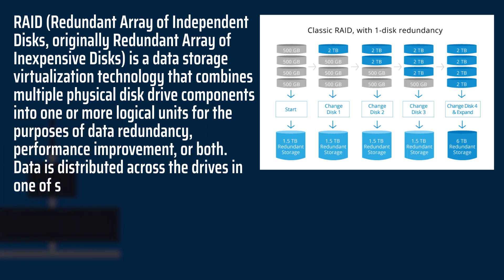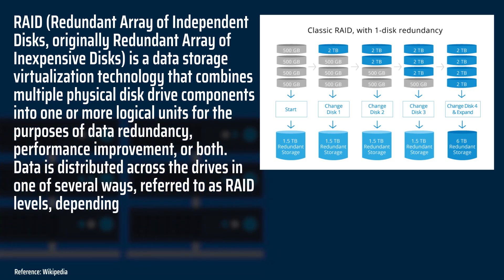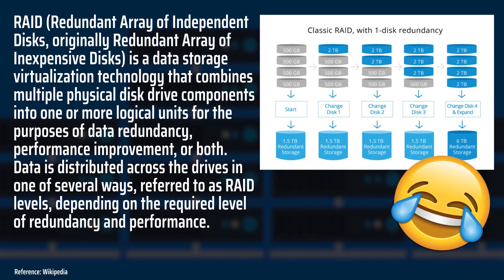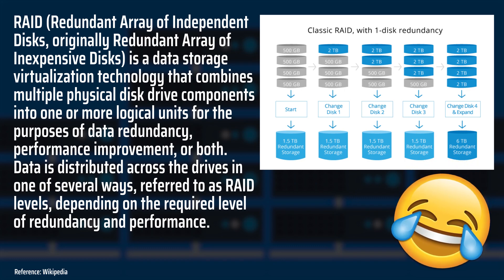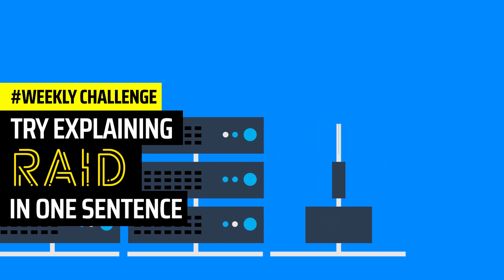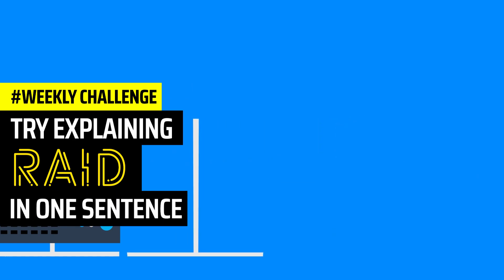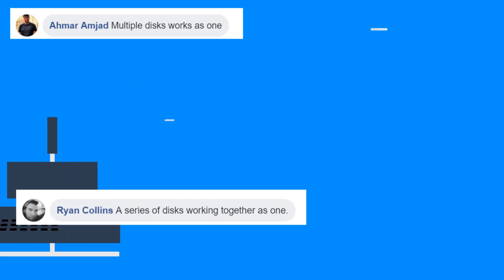Data is distributed across the drives in one of several ways, referred to as RAID levels, depending on the required level of redundancy and performance. Too much hassle to comprehend that explanation, right? We thought so. So we invited fans on social media to explain it with us, with a slight twist: explaining it in one sentence.